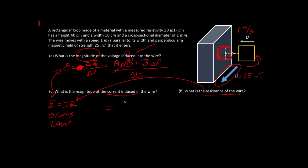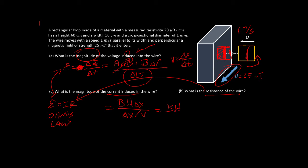Delta A is going to be the height here times the change in the amount of area in the field — a little bit more and a little bit more. It's that little bit more part, so that's the height times a little bit more. And the time — when you use v equals delta x over delta t — so the change in time is going to be that little bit more over the speed at which we're getting a little bit more.